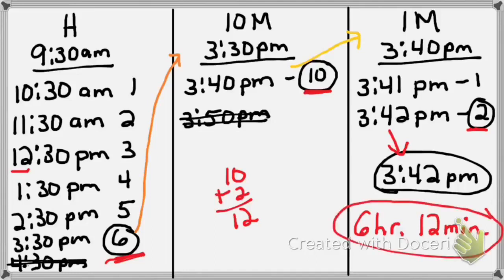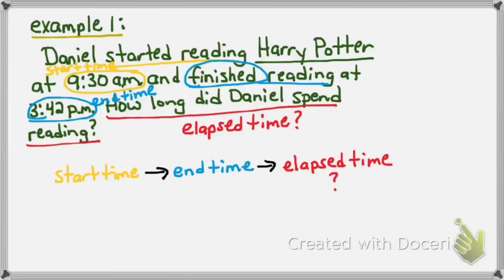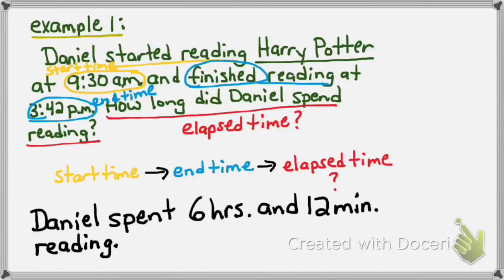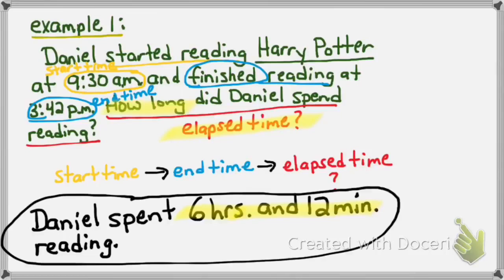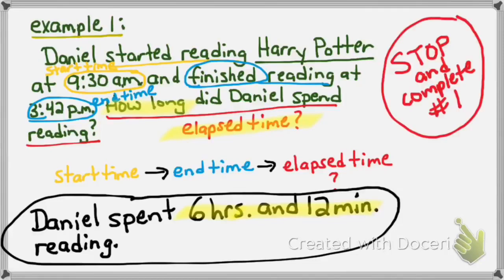Going back to the original problem: the question asks how long did Daniel spend reading? The answer is Daniel spent 6 hours and 12 minutes reading. Remember, elapsed time is not a time on a clock — it should not be written with a colon. It should look like a number of hours and a number of minutes. Please stop the video and complete worksheet number 1 right now.